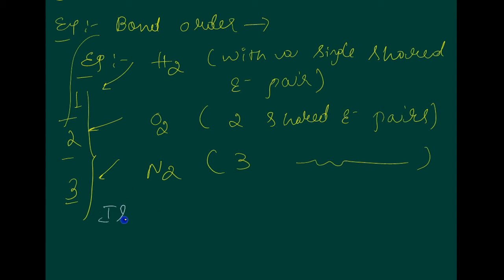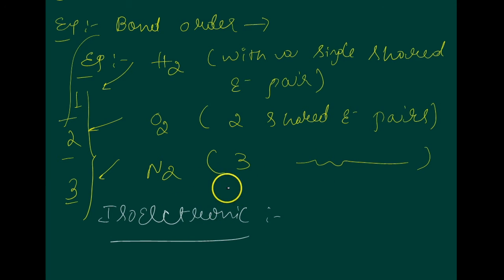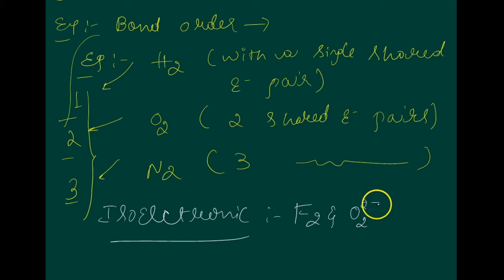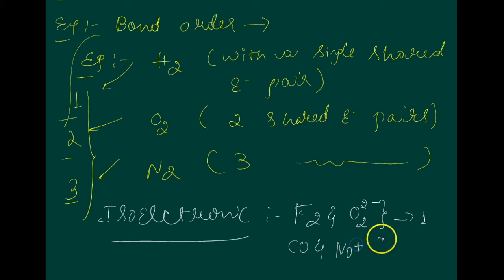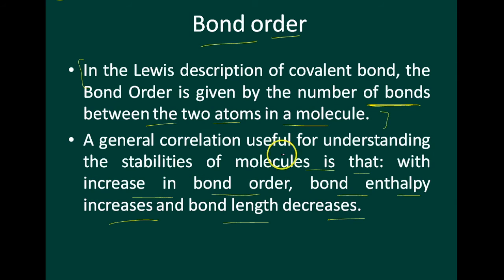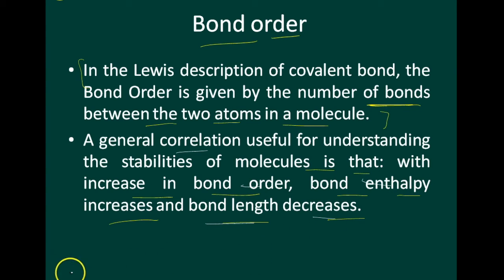Coming to isoelectronic molecules and ions — isoelectronic molecules and ions have identical bond orders. For example, F2 and O2(2-) both have bond order one. Similarly, CO and NO+ both have bond order three. In general, with increases in bond order, bond enthalpy increases but bond length decreases.